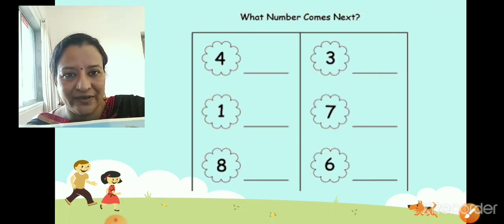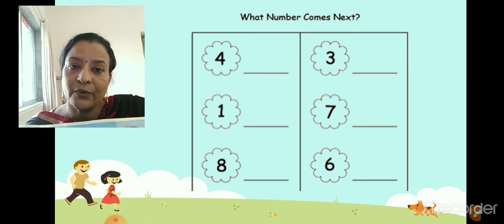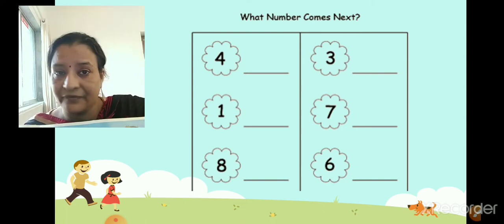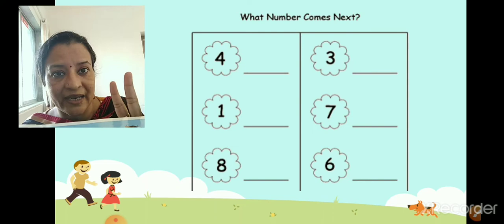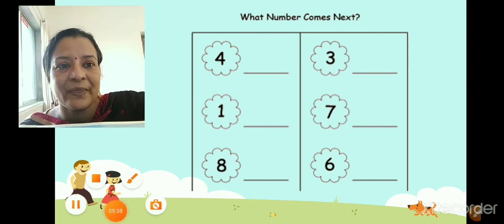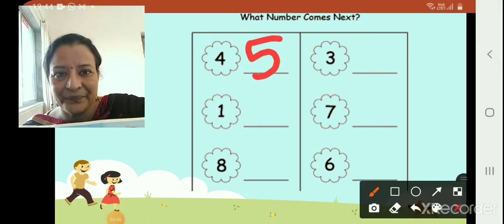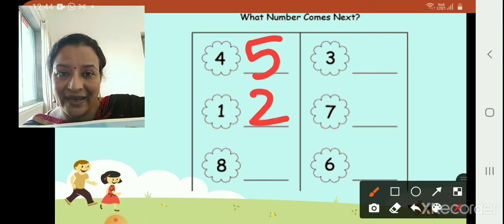Now children, can you tell me what comes after 4? So what you can do is you can say the numbers 1 to 10. So you will know what comes after. So let us start. 1, 2, 3, 4 and 5. So what comes after 4? We saw 5. What comes after 4? 5. So we are going to write here 5. What comes after 1? 2. Correct. Very good.